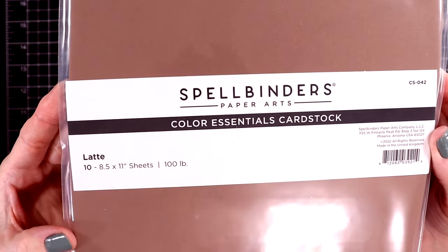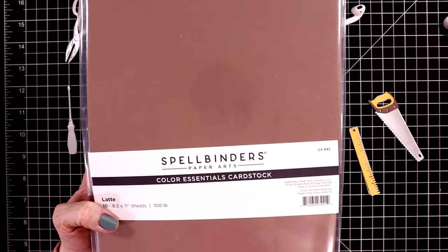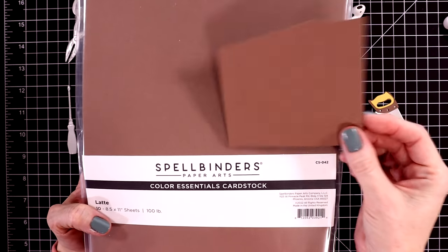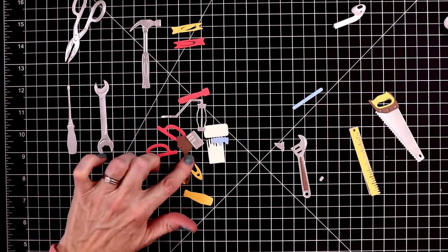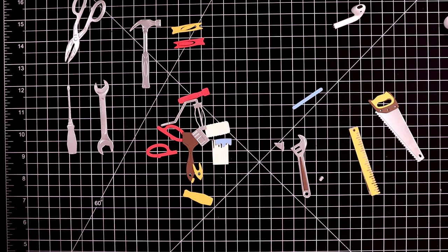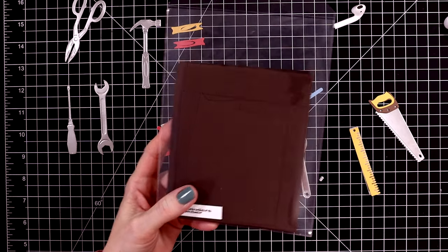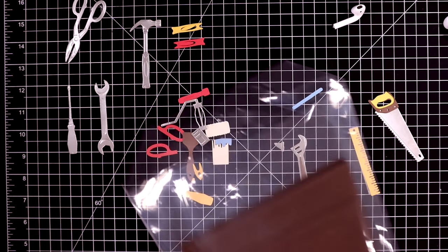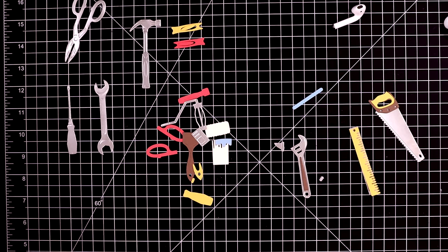I also want to show you a new color of cardstock essential from Spellbinders, it's called Latte. It's such a beautiful light brown. They do have a darker brown in the shop called Timber. It's really dark. I was excited that they released a light brown, and I used the light brown to cut out some of the wood portions to these tools.